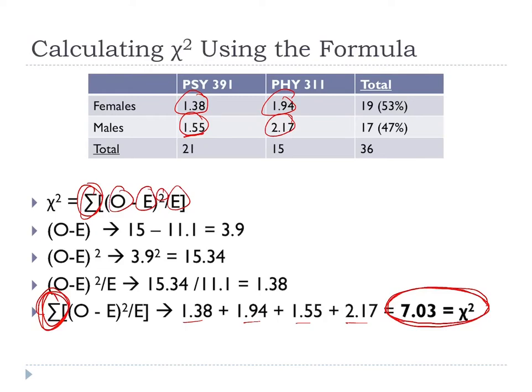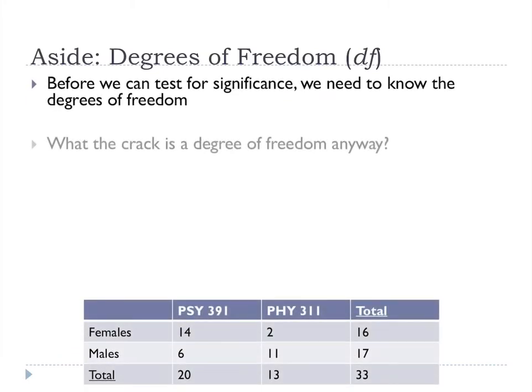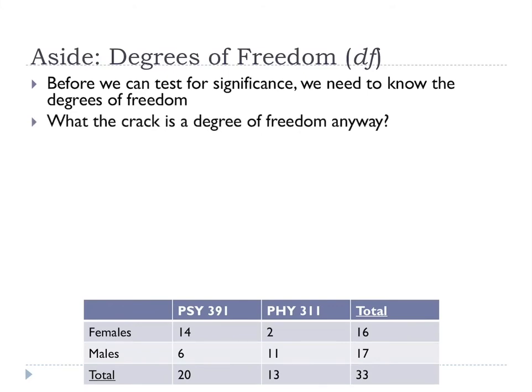The last question is: is this significant? What does 7.03 mean — is it big or small? To find out, we need to use the degrees of freedom to look up our chi-square value in a critical values table. Before we can test for significance, we need to know the degrees of freedom. So what exactly is a degree of freedom?